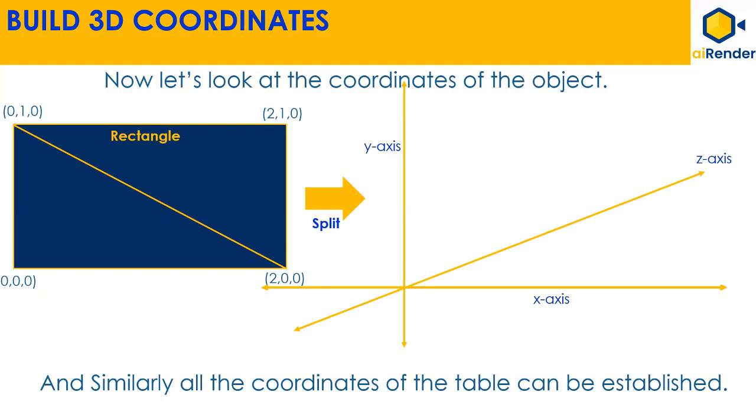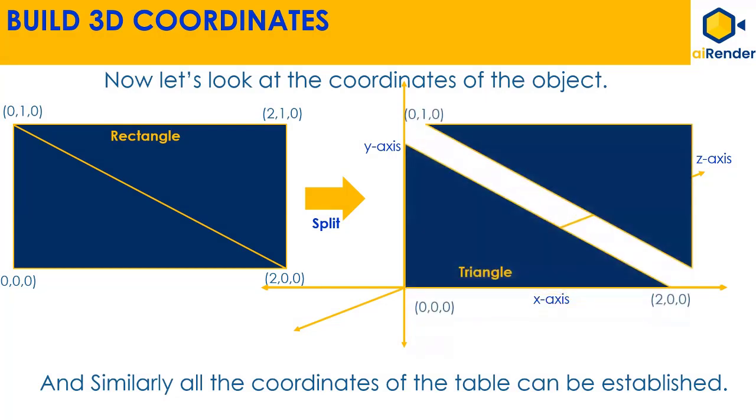One of the triangles has the following coordinates in XYZ coordinate space: 0 0 0, 0 1 0 and 2 0 0. And similarly, all the coordinates of the table can be defined.